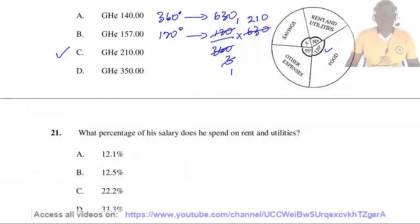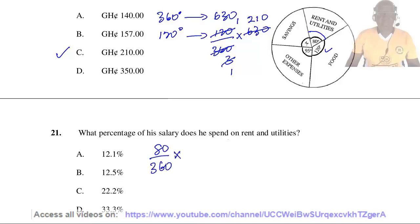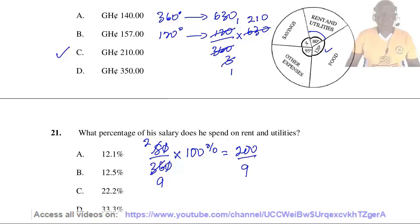Question 21. What percentage of his salary does he spend on rent and utilities? The sum of angles at the center of the pie chart equals 360 degrees. That of rent and utilities equals 80 degrees. So the percentage is going to be 80 divided by 360 times 100%. We cancel: 4 goes into 80 giving 20, and 4 goes into 360 giving 90. So we get 200 divided by 9.